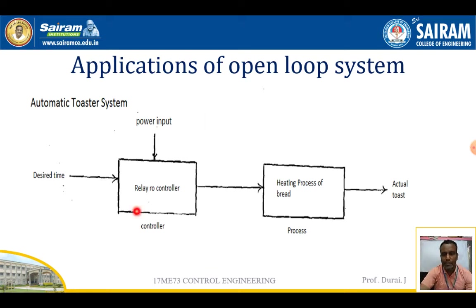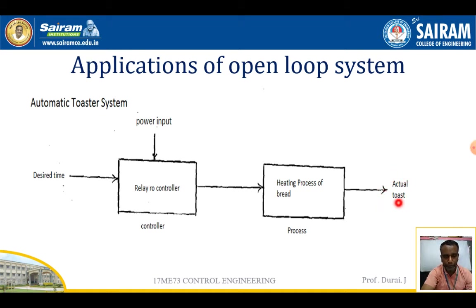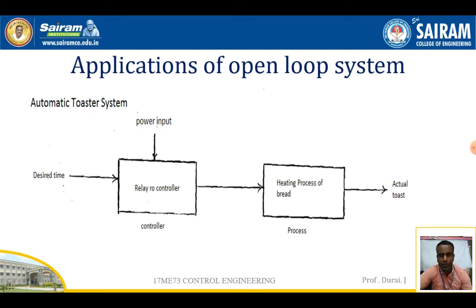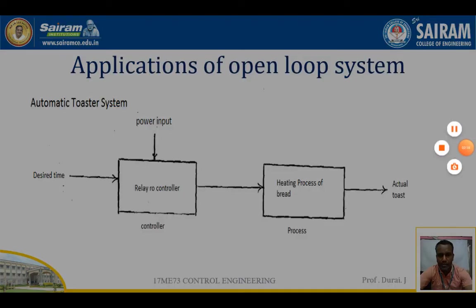This is about the open loop control system — the automatic toaster device. The controller is the switch and the process is heating the bread. The output has to be tested by humans; then only the output value will be known. This is one example of an open loop system.